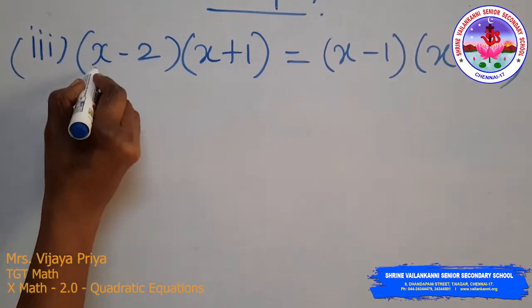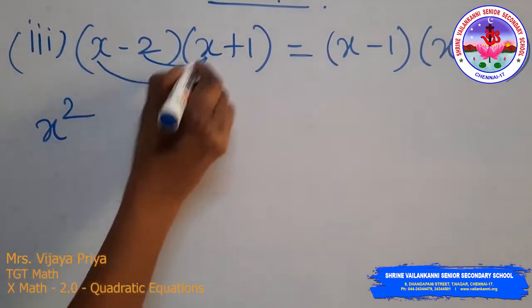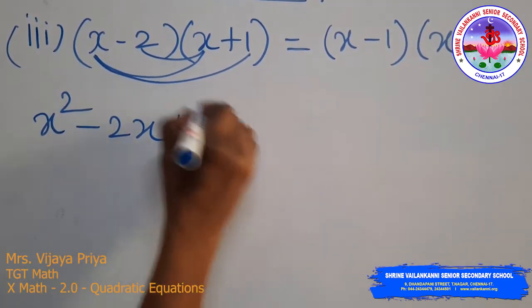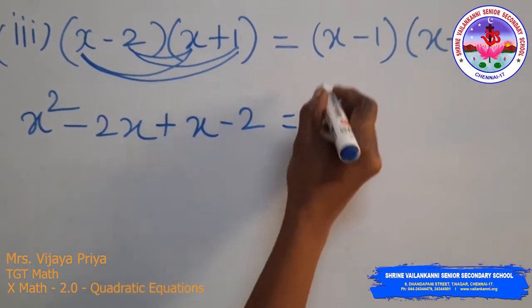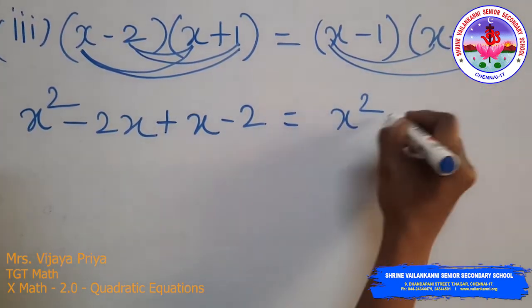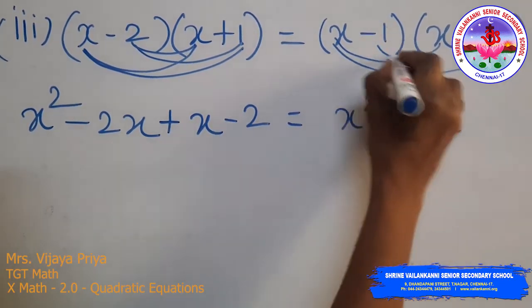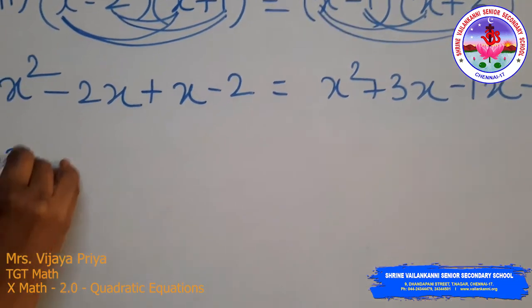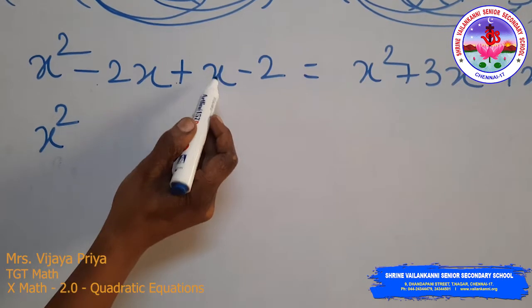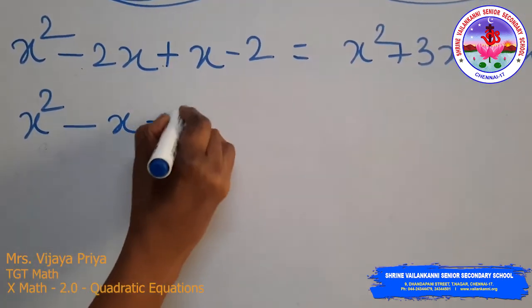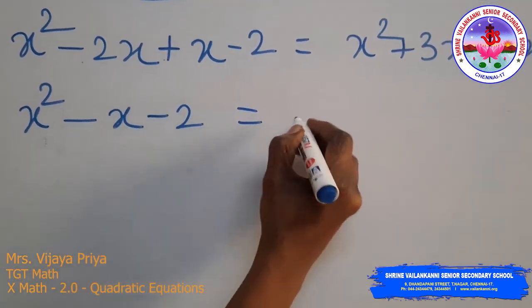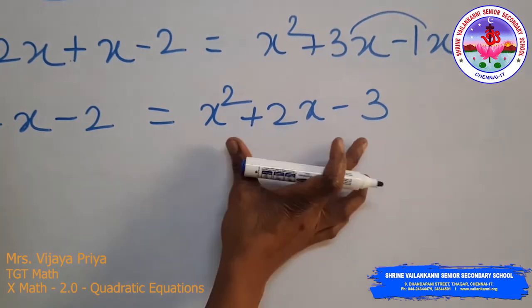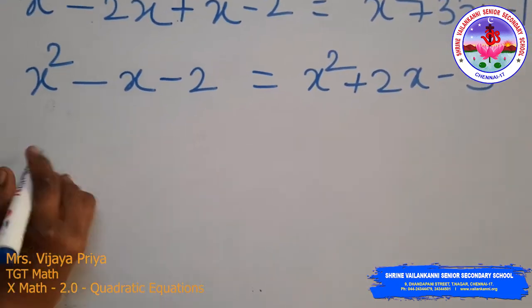Simplifying the LHS: x² − 2x + x − 2 = x² − x − 2. Simplifying the RHS: x² + 3x − x − 3 = x² + 2x − 3.